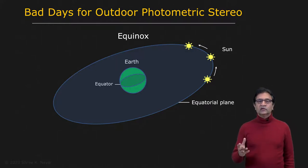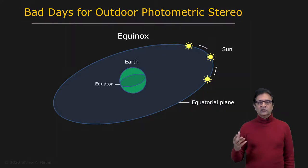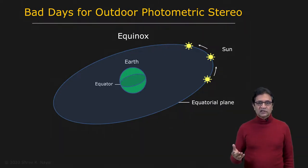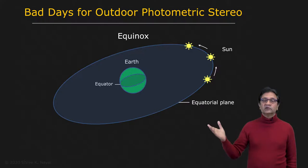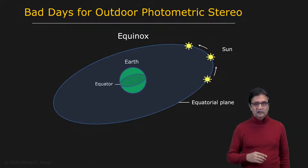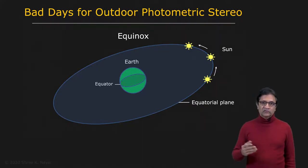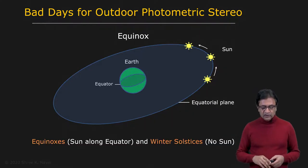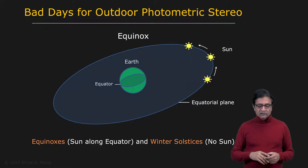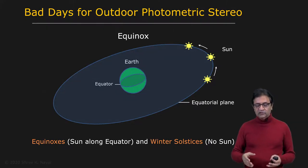Then there's the winter solstice. During the winter solstice, parts of the Earth receive hardly any sunlight, and when sunlight does arrive it's from less than 15 degrees above the horizon — very weak. So winter solstices are obviously bad days for outdoor photometric stereo. In summary, bad days for outdoor photometric stereo are equinoxes and winter solstices.